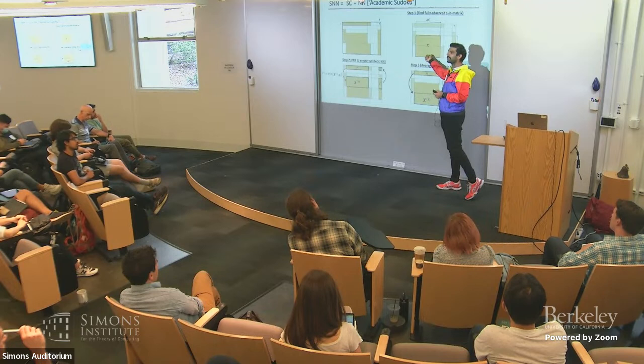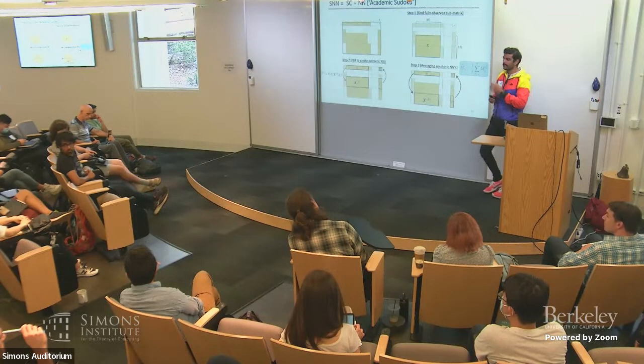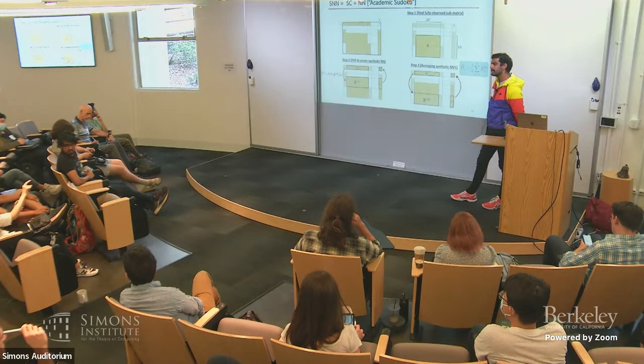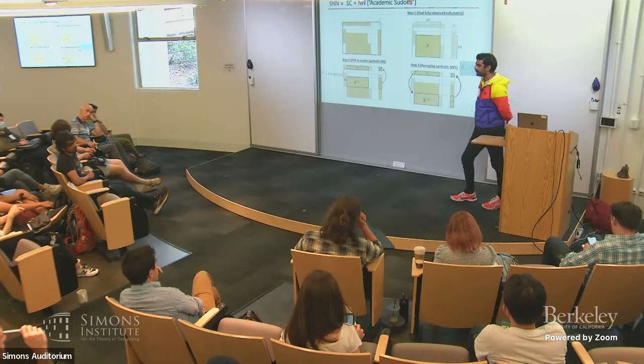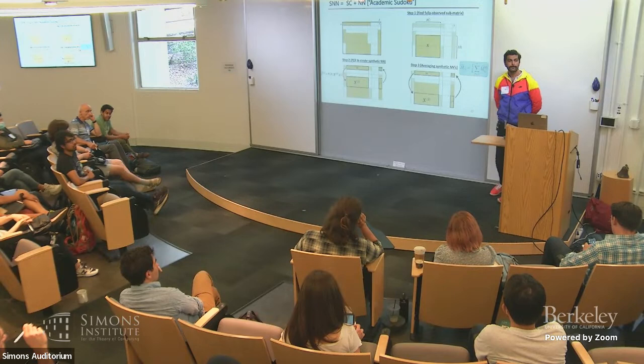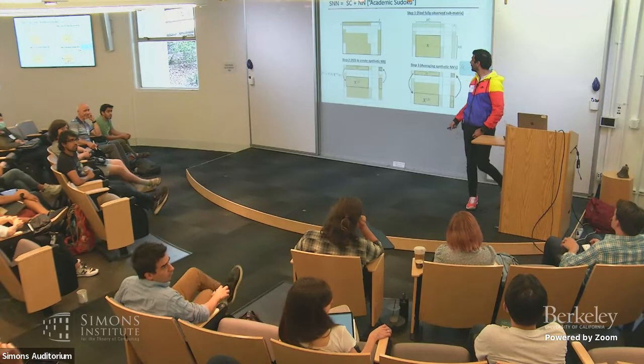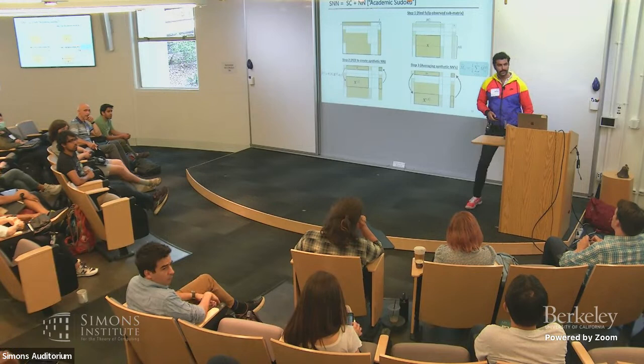Question: for the staircase example, do all k sub-blocks need the same anchor rows and anchor columns? Answer: No, just for simplification. Question: are rows and columns symmetric? You could run it on the transpose as well, though in some applications one direction is more natural.